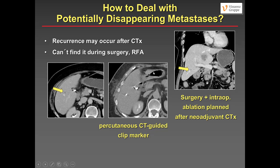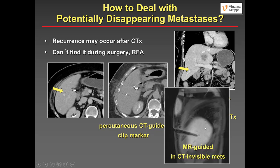What do we do with disappearing or potentially disappearing metastases? In the MDT meeting, if a surgeon may not find a small parenchymal metastasis after neoadjuvant therapy-induced shrinkage, you can percutaneously insert a clip marker using anatomic landmarks to guide the surgeon. If the metastasis is completely invisible on MRI, you can perform an MR-guided procedure using liver-specific contrast to insert a clip marker at the site of the CT-invisible metastasis.